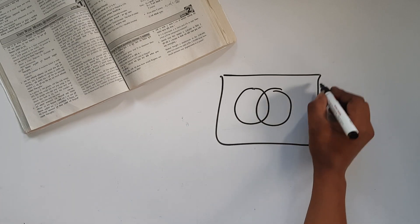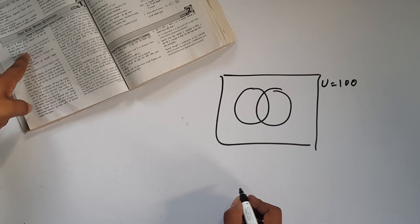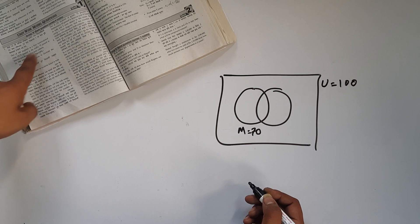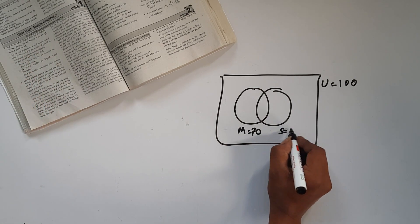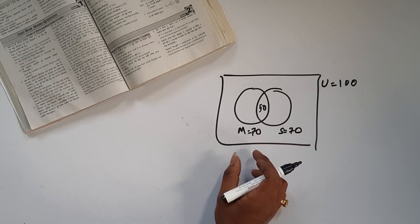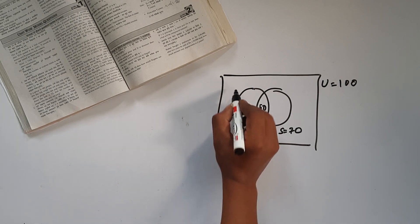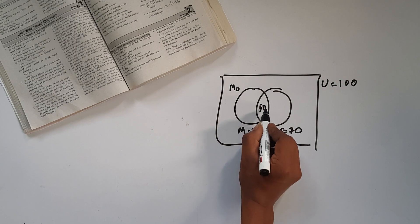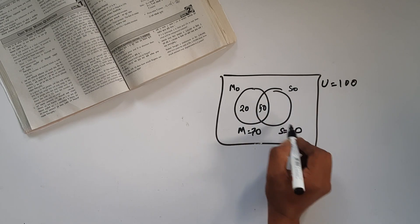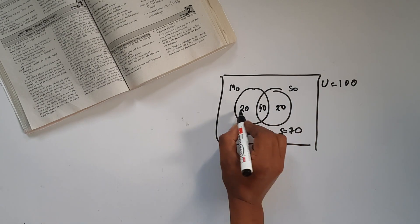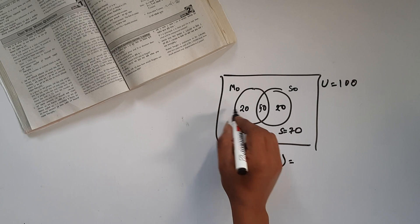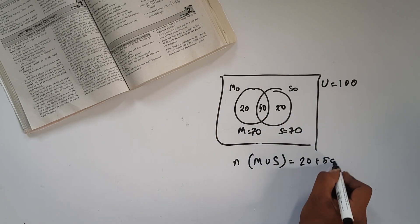We have the universal set U and the students. Math-only students: 70 minus 50 equals 20. Science-only students: 70 minus 50 equals 20. The number of math union science equals 20 plus 50 plus 20, which equals 90.